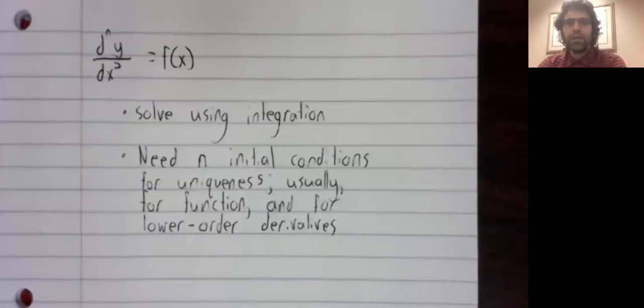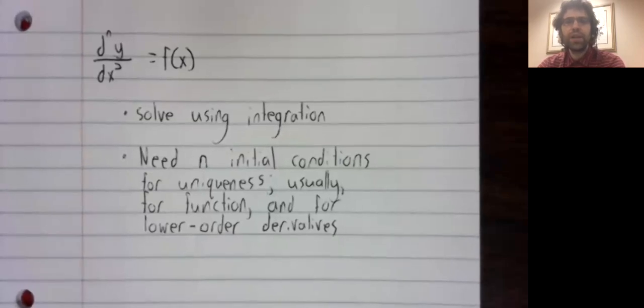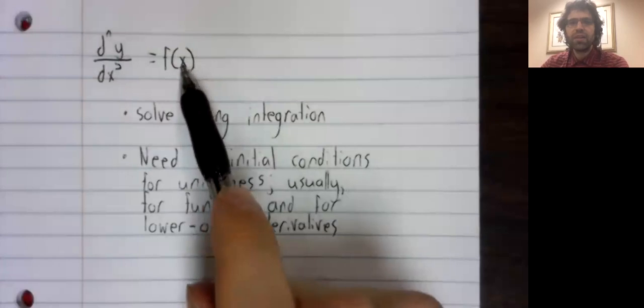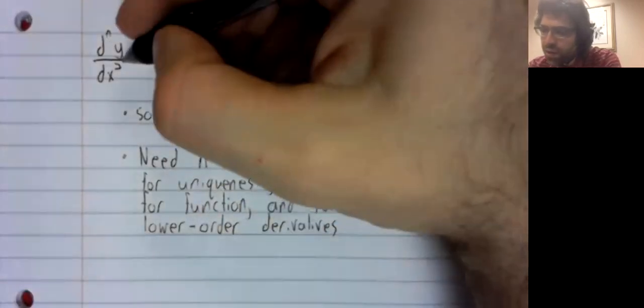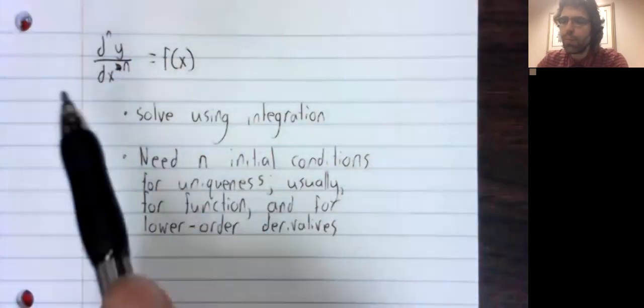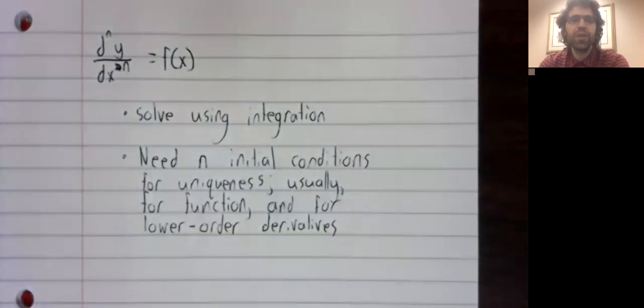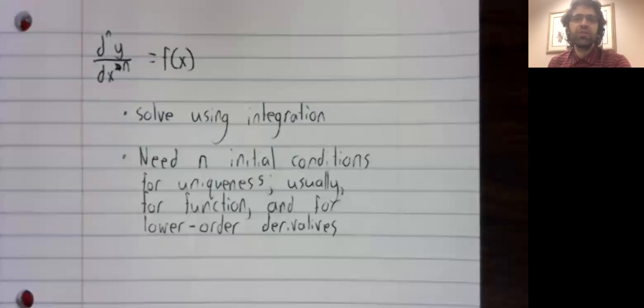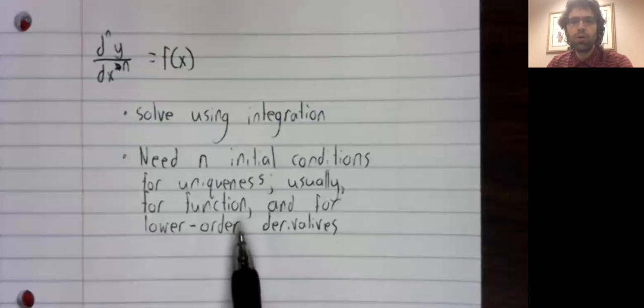Suppose instead of the derivative of y is a function of x, we have the nth derivative of y is a function of x. We can still solve this using integration. The difference becomes that we now need n initial conditions to get unique solutions. And usually, those initial conditions are given for the function and for the lower order derivatives.